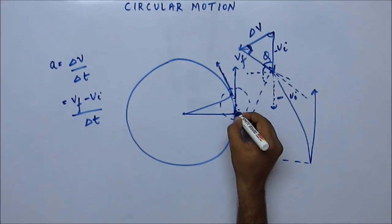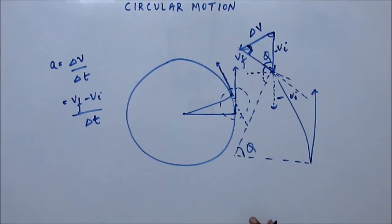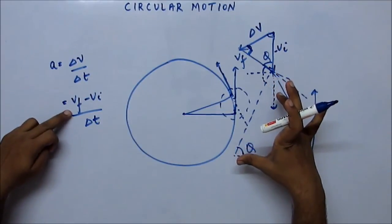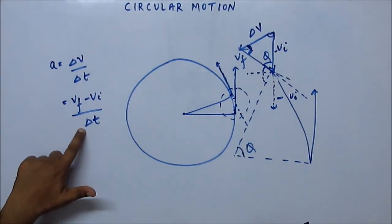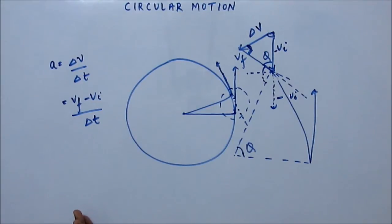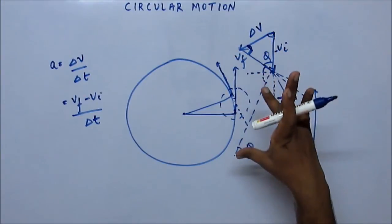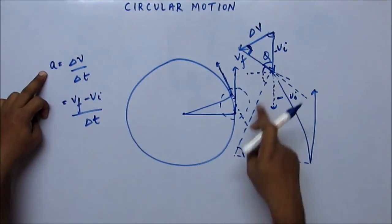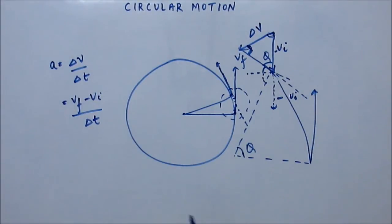For an infinitesimally small displacement, this vector must pass through the center. The change in velocity vector is passing through the center, and the acceleration has the direction of the change in velocity vector. That means this acceleration, which is just changing the direction of velocity, must pass through the center. So the force responsible for this change must also pass through the center — that is why we call it centripetal force.